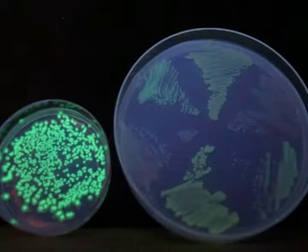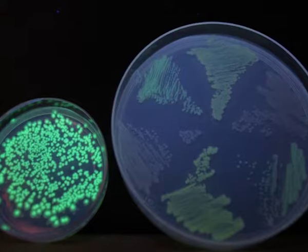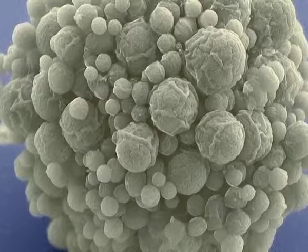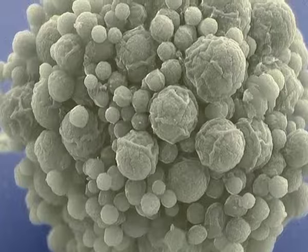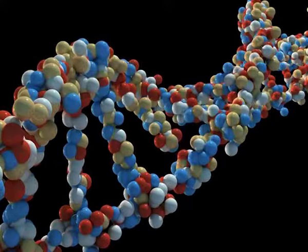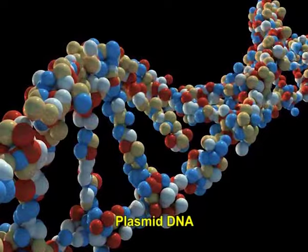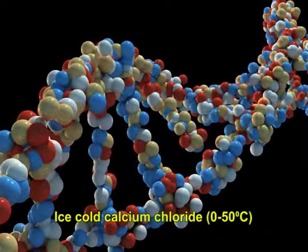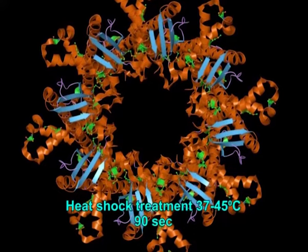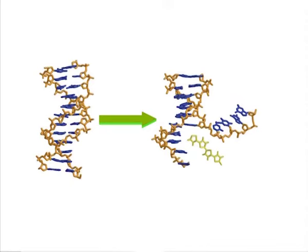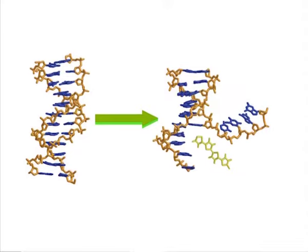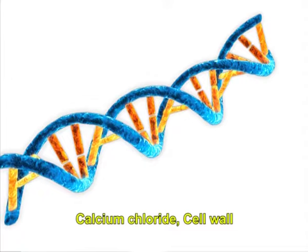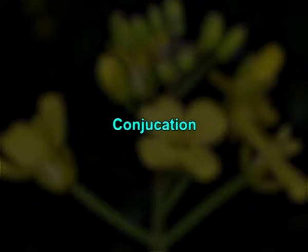Bacterial transformation is used for introducing foreign DNA into bacterial cells. The transformation rate, which is the fraction of cell population that can be transformed, is very high with this technique. For example, the uptake of plasmid DNA by E. coli is accomplished in ice-cold calcium chloride at 0 to 5 degrees Celsius, followed by heat shock treatment at 37 to 45 degrees Celsius for about 90 seconds. Transformation efficiency refers to the number of transformants per microgram of added DNA. Calcium chloride breaks the cell wall at particular regions and binds the DNA to the cell surface.